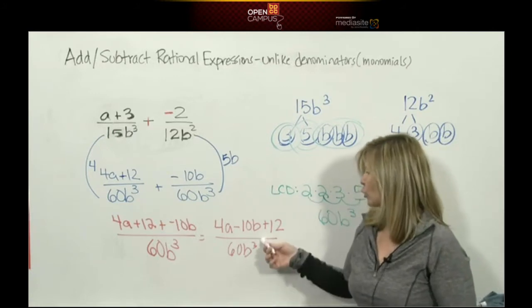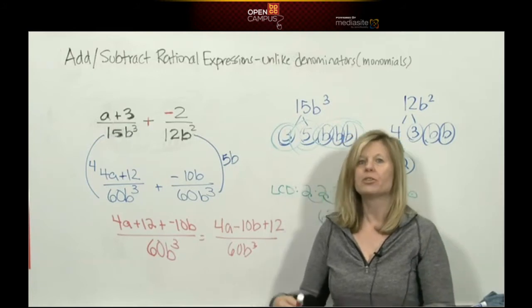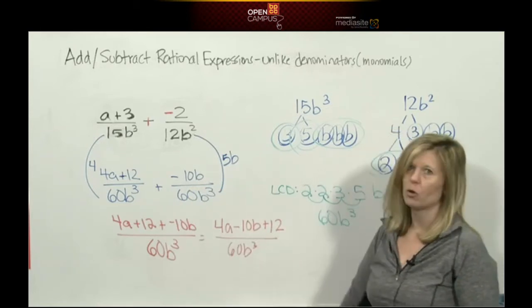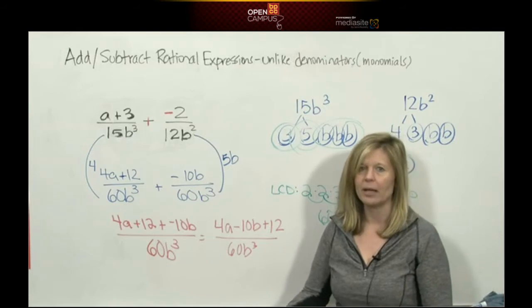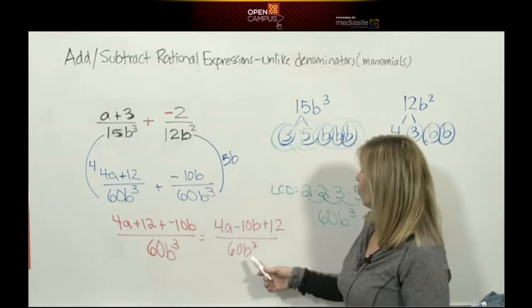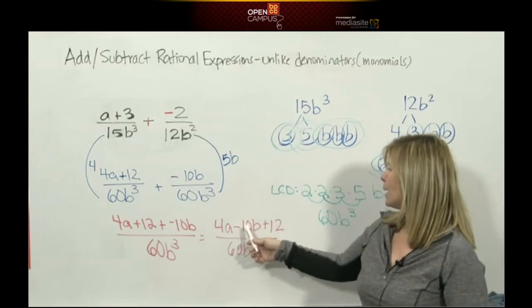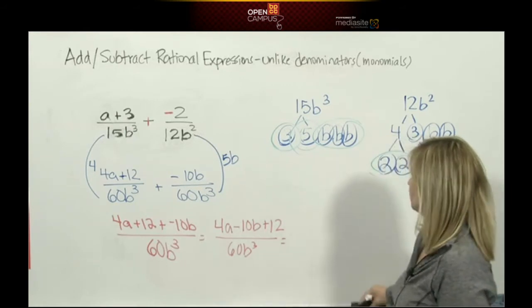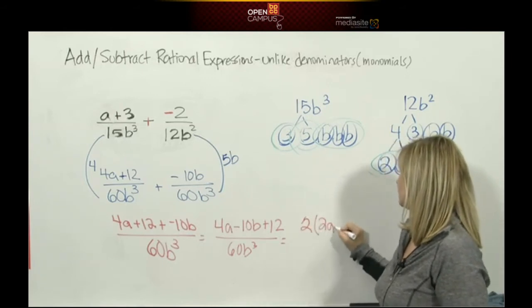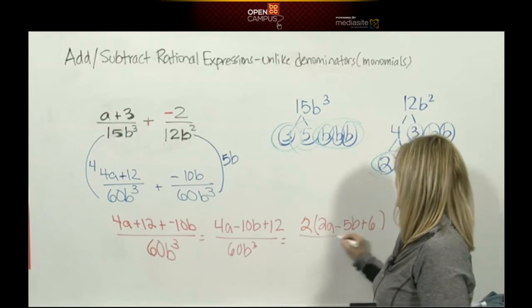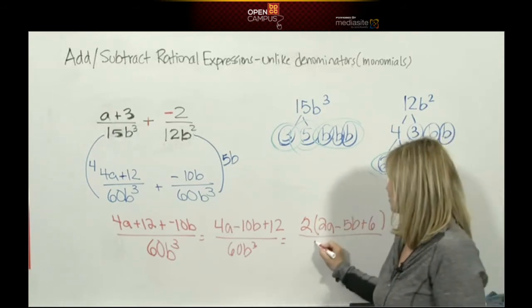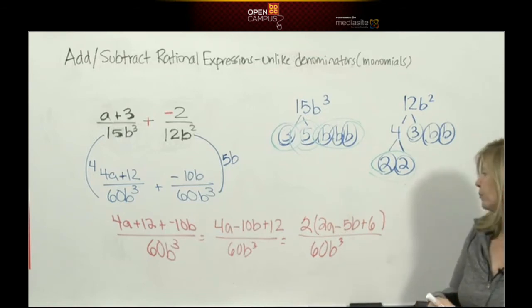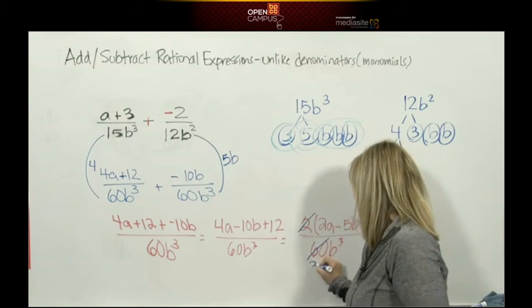Now the last statement in the song says reduce the fraction. Reduce means to do division. But to do division, we have to be connected by that almighty multiplication. Right now your numerator is not multiplication. So that's where your factoring rules come in. We have 4a minus 10b plus 12. I can use the GCF rule. I can factor out a 2. If I take out a 2, I'll be left with 2a minus 5b plus 6. Now we can do some dividing. The only thing we can divide is 2 goes into 60, 30 times.